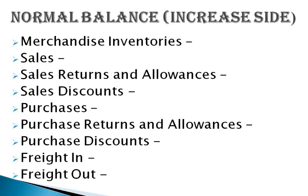Now let's review the normal balance of each account name used by a merchandising business. Merchandise inventory is an asset, so its normal balance is debit. Sales or sales revenue is a revenue account, so its normal balance is credit. Sales returns and allowances is a contra sales account — shown as a deduction from sales — so its normal balance is debit. Sales discounts is also a contra sales account, so its normal balance is also debit.